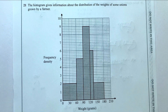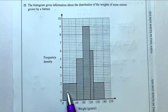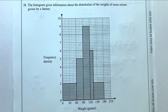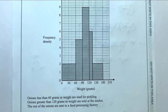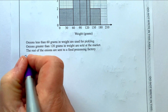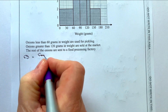Question 21 is a histogram giving information about the weights of some onions. What we need to do is work out the value of each of these blocks. We've got the weight and the frequency density, so we can use the formula: frequency density equals frequency divided by class width.